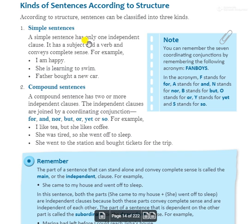The first type is simple sentences. A simple sentence has only one independent clause. It has a subject and a verb and conveys a complete sense. A simple sentence has a single subject and a single verb — one person doing one action — and that completes the sentence.